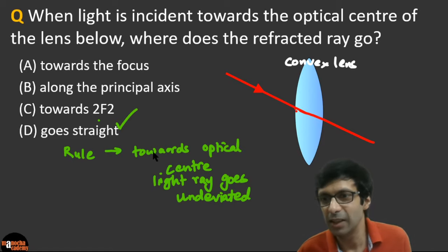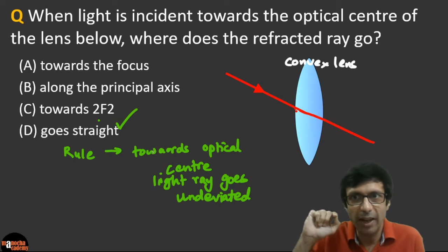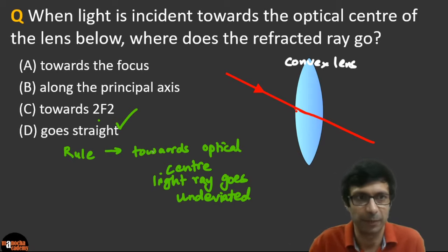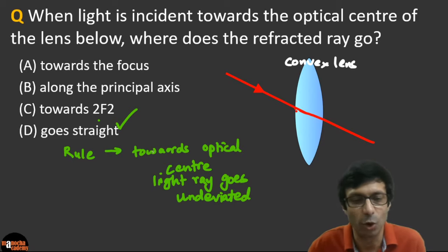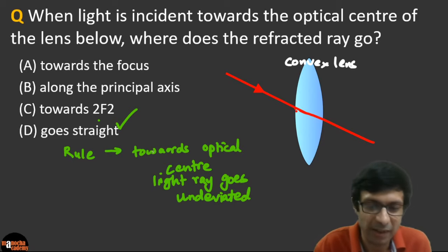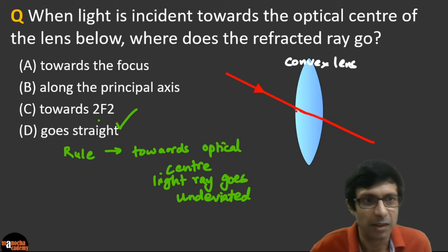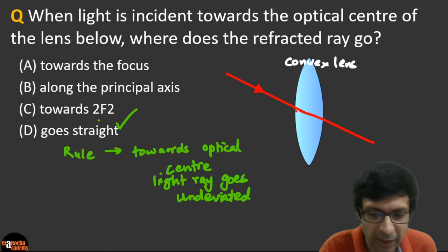The right answer is option D. This is a special case — when the ray of light is going towards the center of the lens, it goes straight without any deviation.